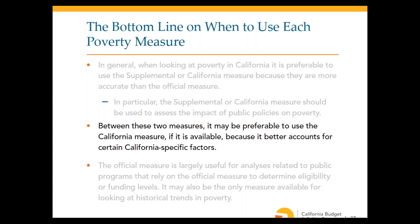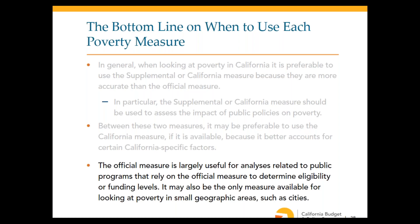The official measure is largely useful in the California context for analyses related to public programs that use the official measure to determine eligibility or funding levels, and it may be the only measure available for very small geographic areas like cities. However, it's important to keep in mind that even when it's the only one available, it may give a distorted picture of economic security — especially if a city has high housing costs or many residents receiving non-cash supports.